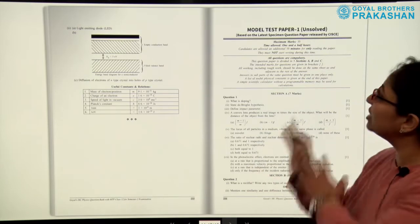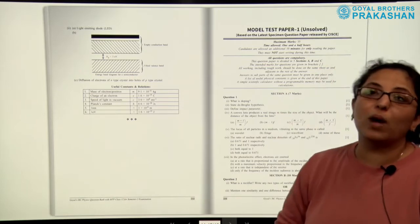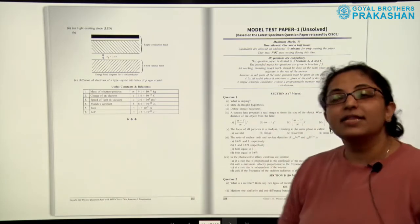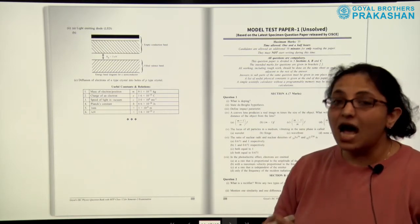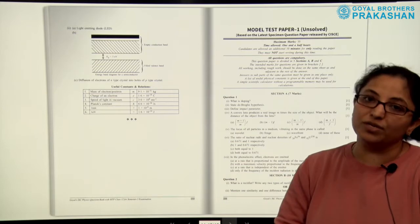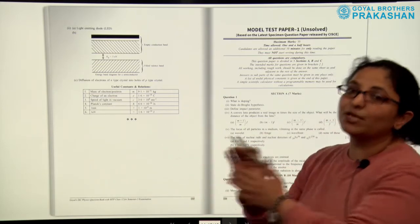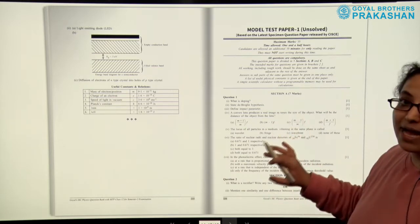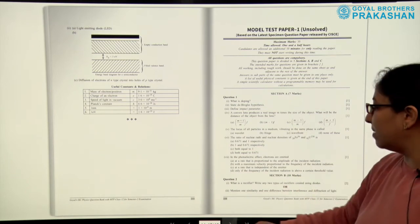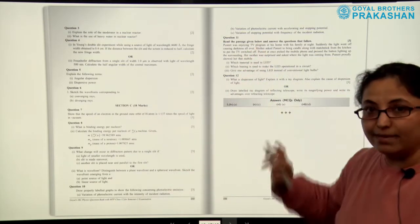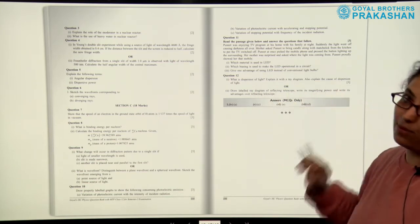After this we come to Section C of the book — the model test papers. Model test paper number one is unsolved, and there are four more similar papers, making a total of five unsolved model test papers for student practice. These are strictly based on the pattern of the specimen question paper, with Section A for 7 marks, Section B for 10 marks, and Section C for 18 marks. Answers to the MCQs are given at the bottom in a grey box.